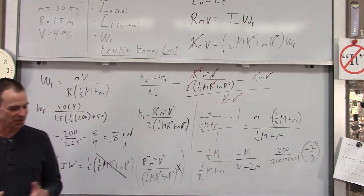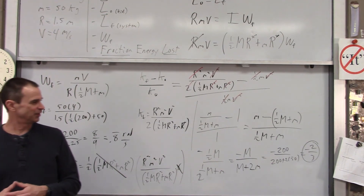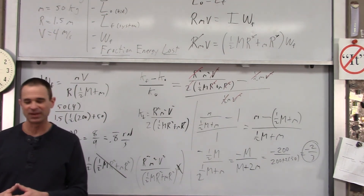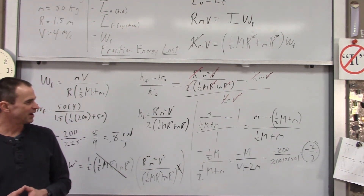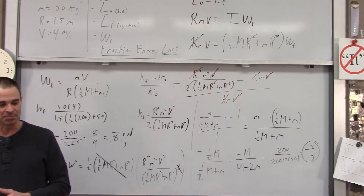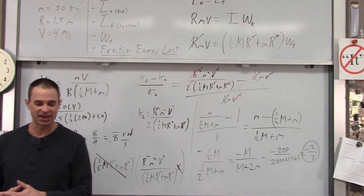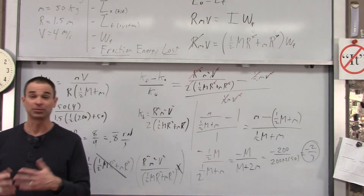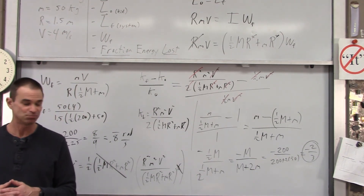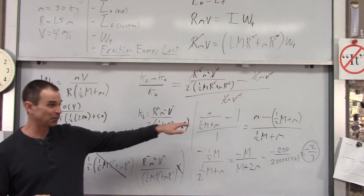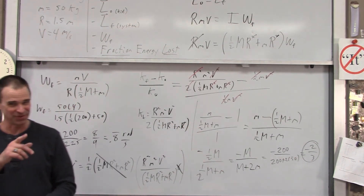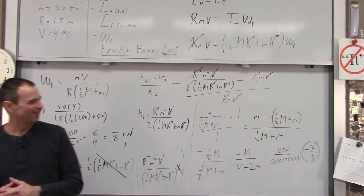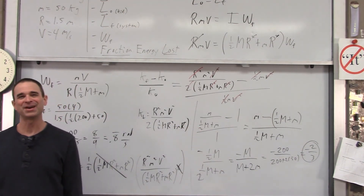That was an example involving conservation of angular momentum — finding the initial and final angular momentum, the final angular velocity, and what fraction of energy is lost in an inelastic collision. We also caught and fixed an algebraic sign error along the way. I hope that was helpful — thank you very much.